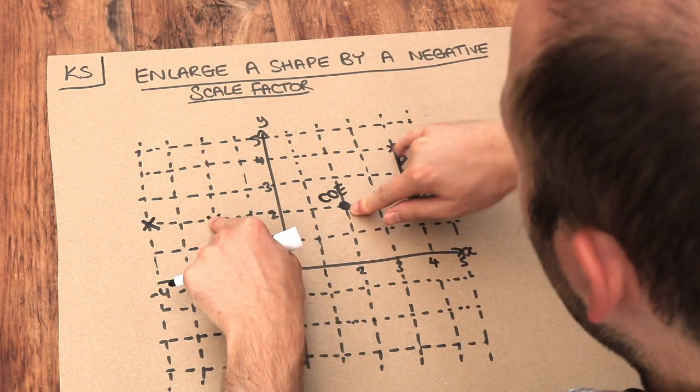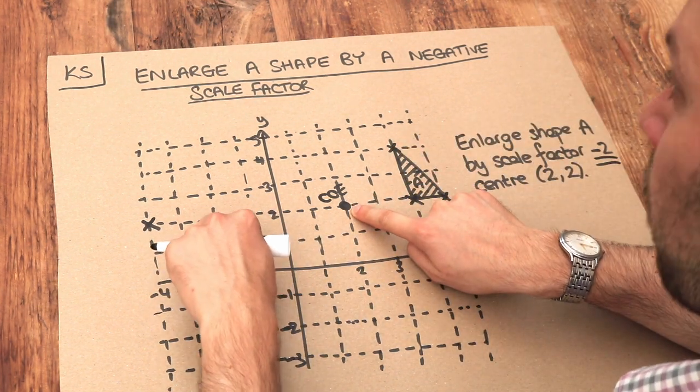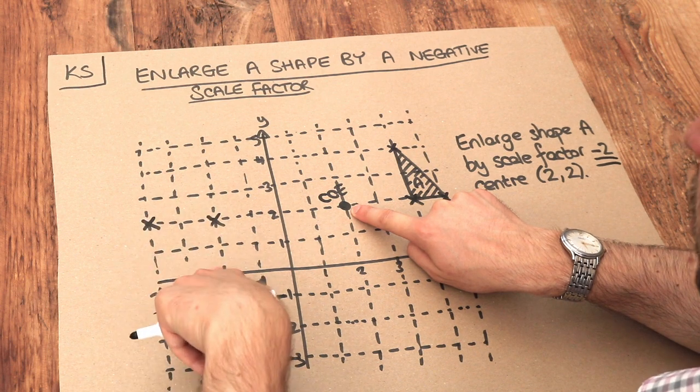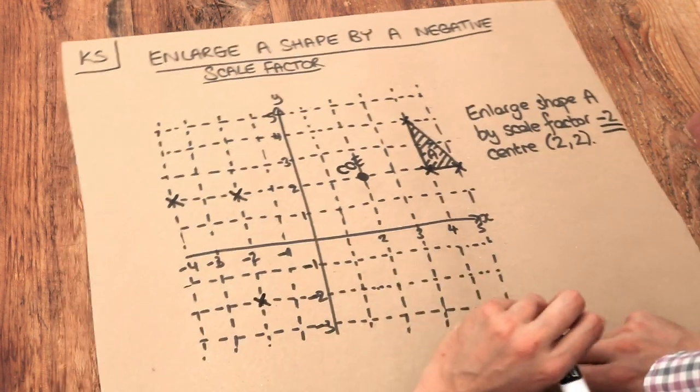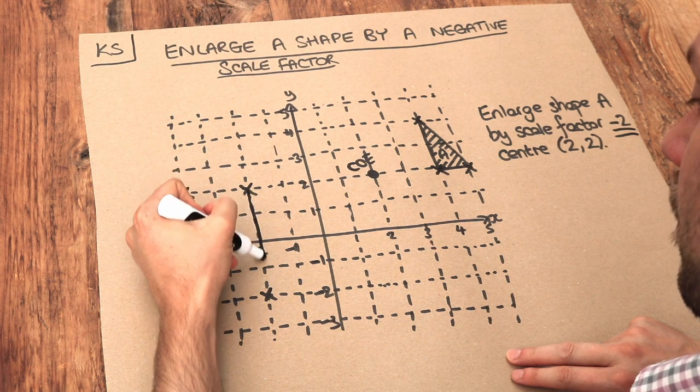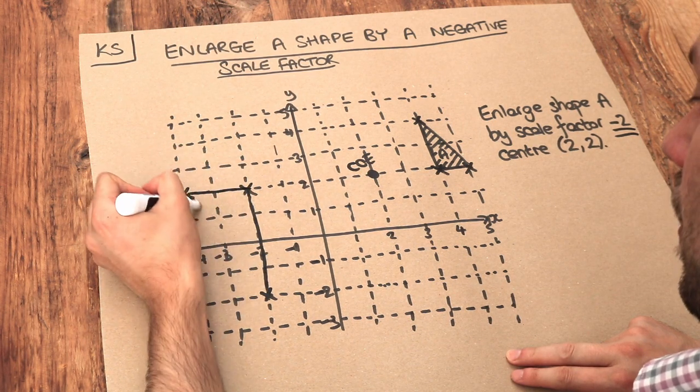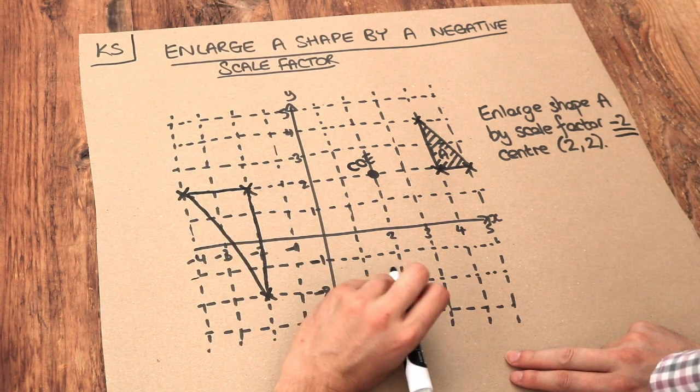And the 2 up becomes 4 down in the opposite direction. So 1, 2, 3, 4 and we end up here. So if we then join these together, we get this shape here.